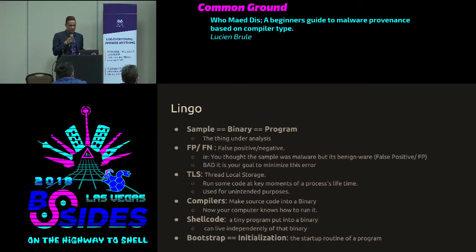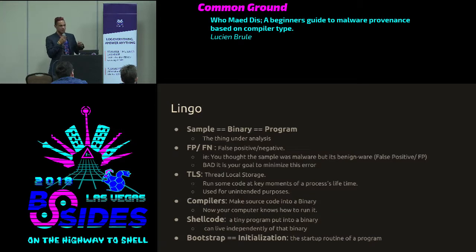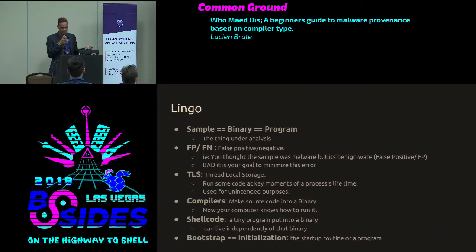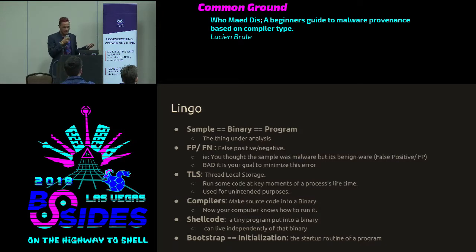Some lingo: when I say 'sample,' that essentially means an executable, like a Windows executable — the thing under test. An FP or FN is a false positive or false negative. TLS, Thread Local Storage, is a cross-platform thing that lets you run code at a given point in a program's lifetime. Compilers translate source code into the actual binary. Shell code is an independent program that can live inside of another sample. Bootstrap or initialization is the startup routine of any program.